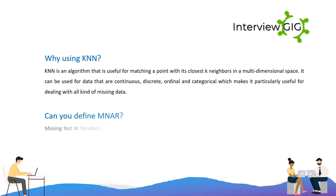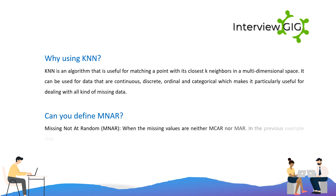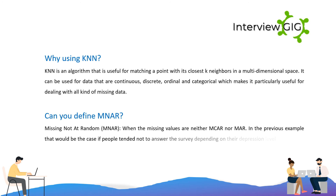Can you define MNAR? Missing Not At Random (MNAR) refers to when the missing values are neither MCAR nor MAR. In a previous example, that would be the case if people tended not to answer the survey depending on their depression level.